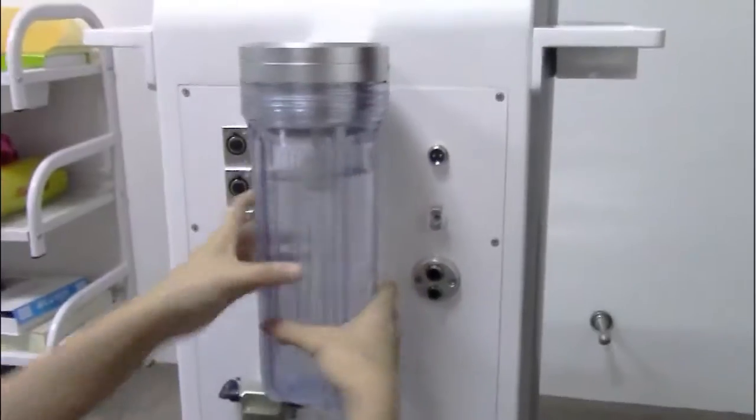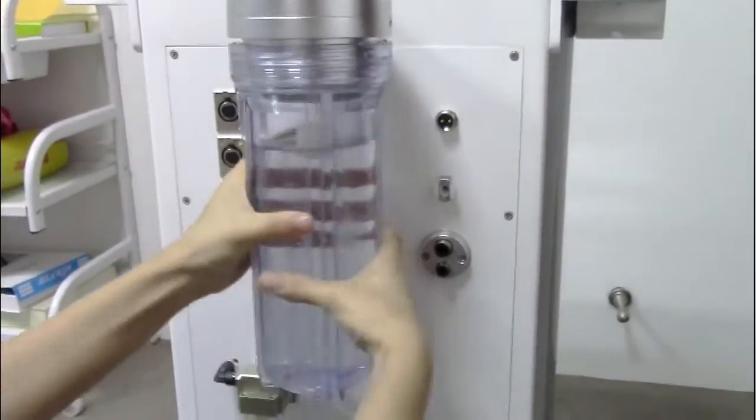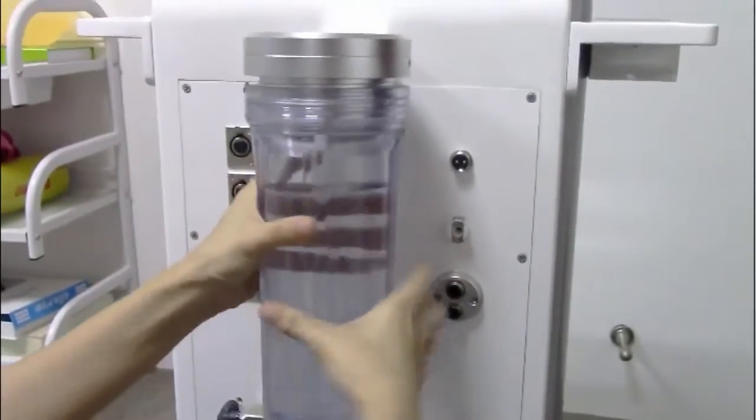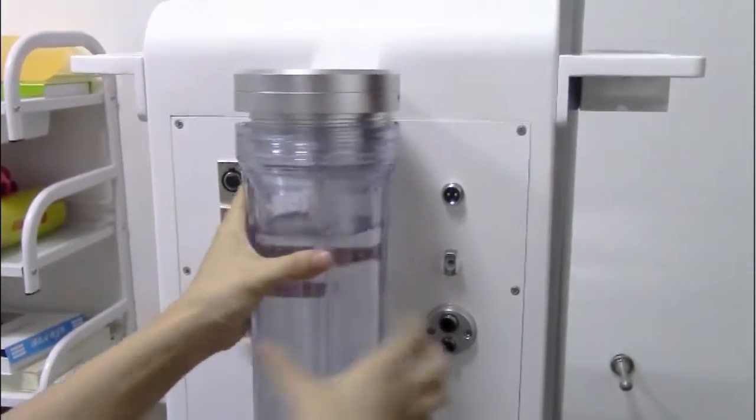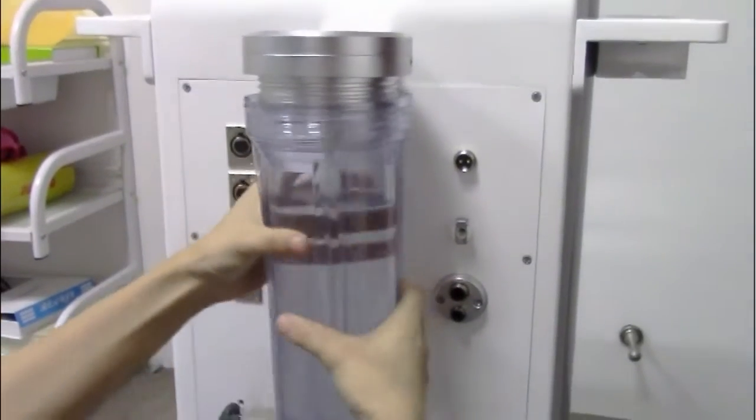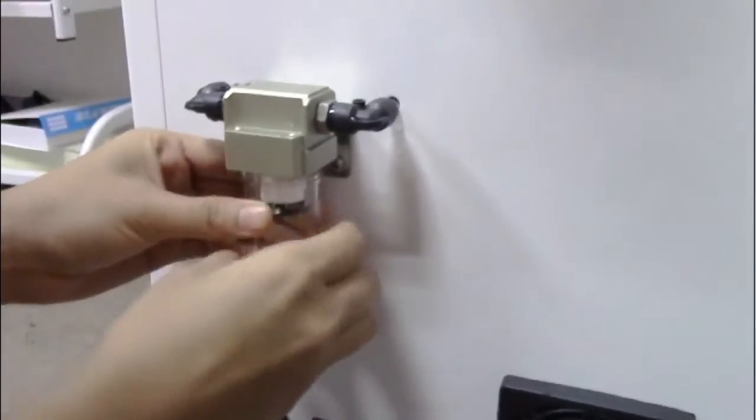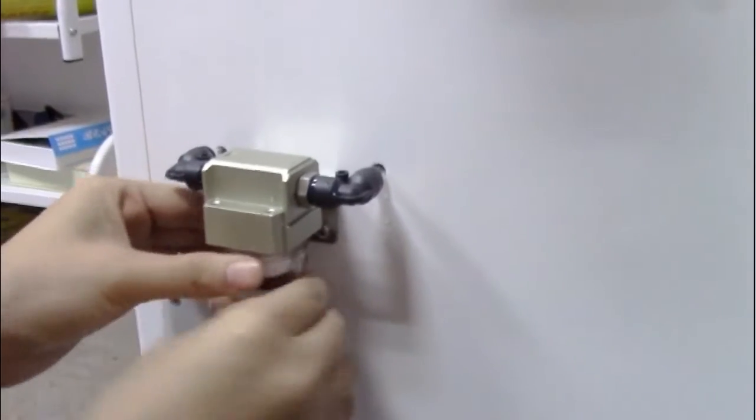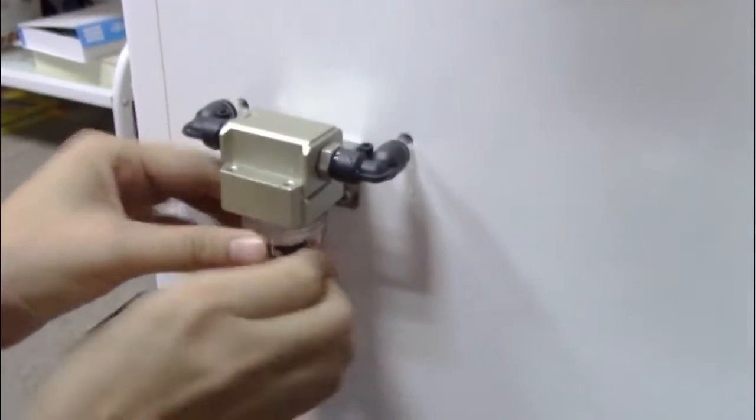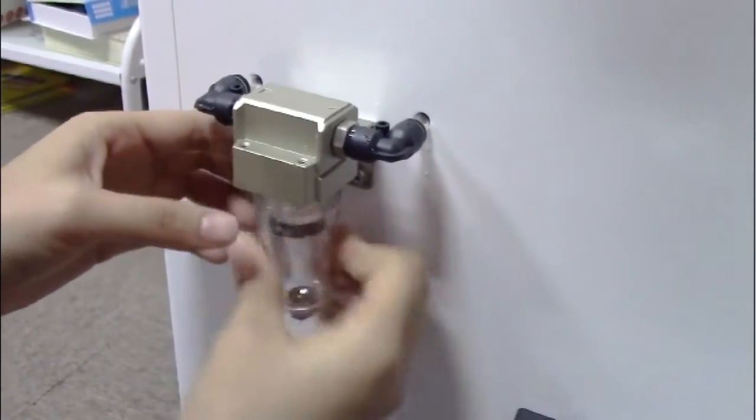Then the waste water bottle reaches about two-thirds, you need to pour out the waste water. This is also the waste water bottle. When it reaches half of the bottle, you need to pour it out.